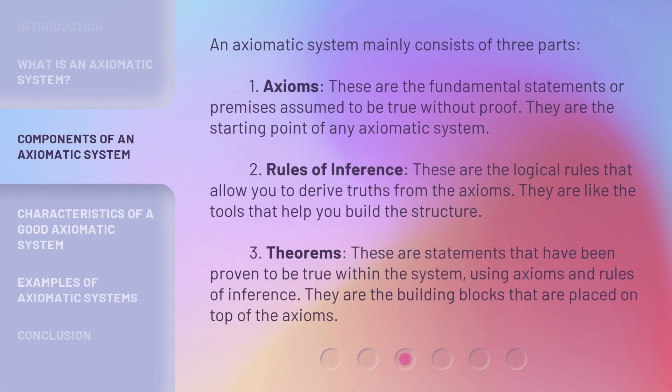An axiomatic system mainly consists of three parts. First, axioms. These are the fundamental statements or premises assumed to be true without proof. They are the starting point of any axiomatic system.